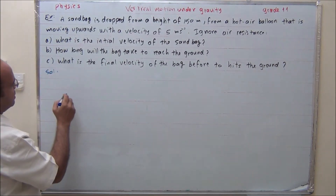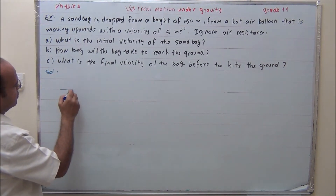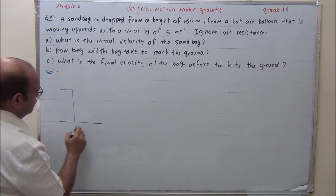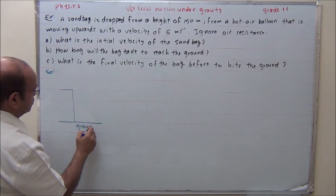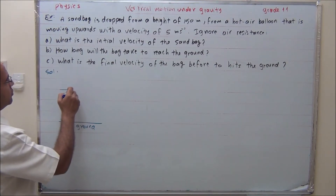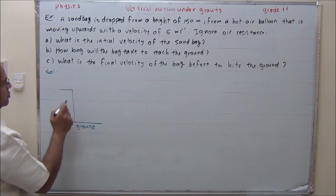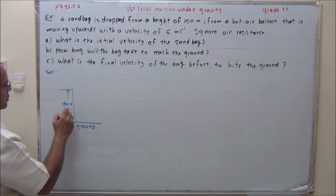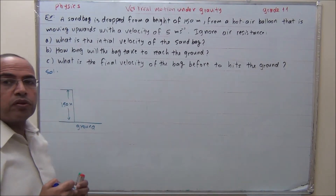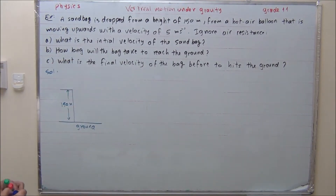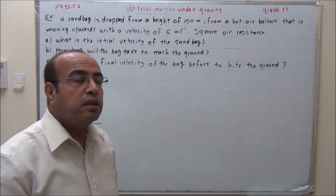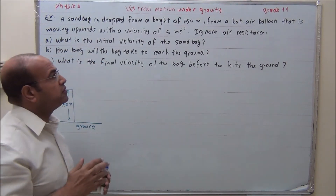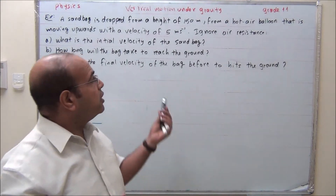This is the height and this is the ground. It is dropped from this point — 150 meters — from a hot air balloon that is moving upward with a velocity of 5 meters per second. Ignore air resistance.